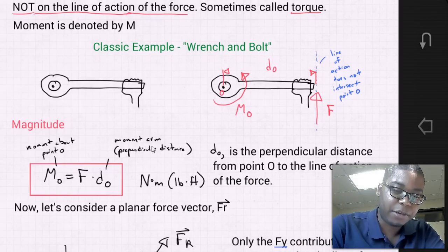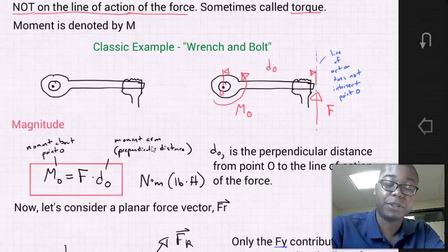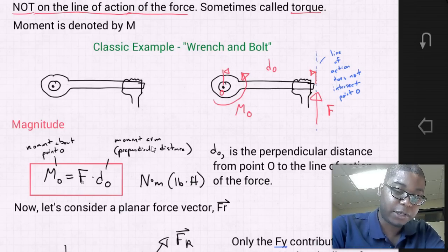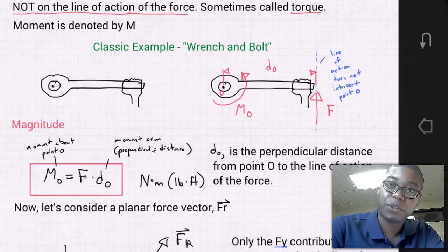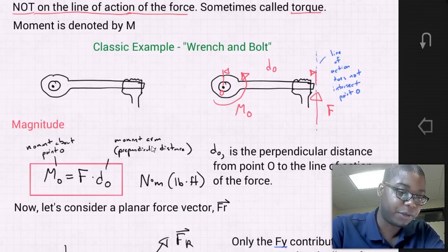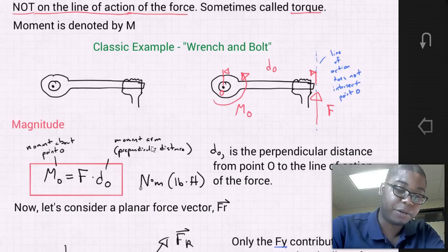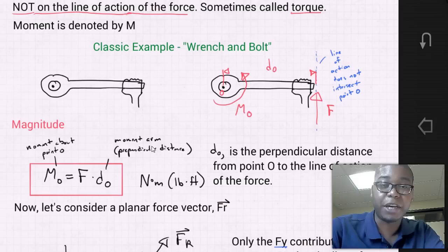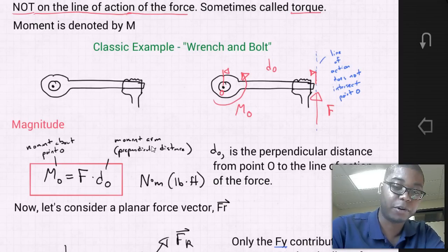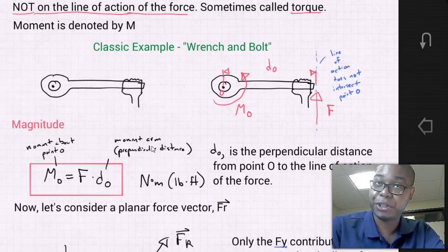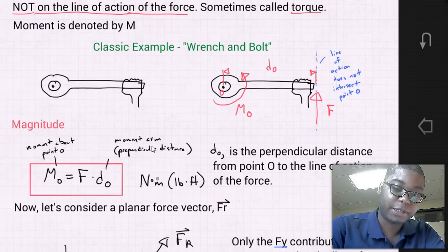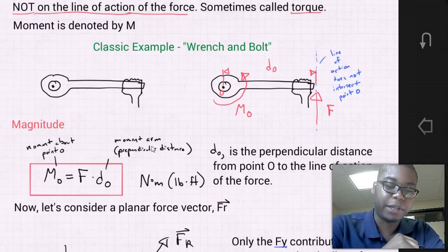The magnitude of a moment has certain units. Since a moment is force times distance, the units are either newton-meters or pound-feet. It can also be newton-millimeters or pound-inches — but it is always a unit of force times a unit of length.